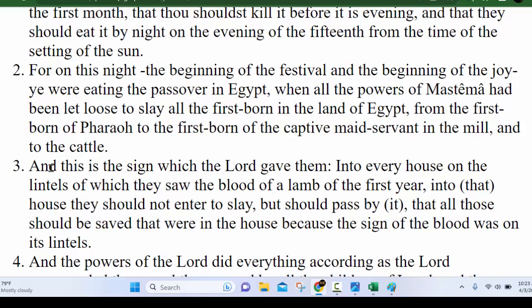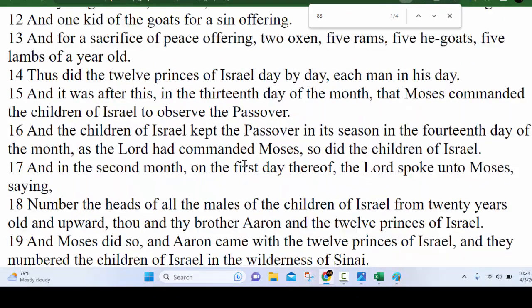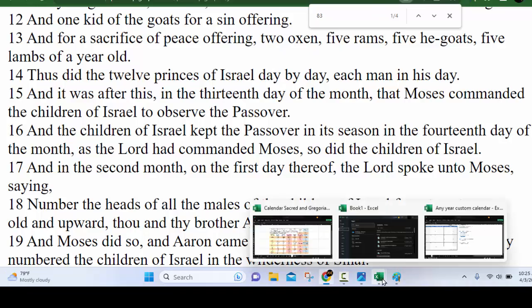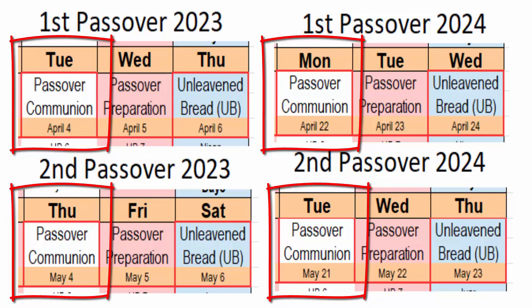In the Book of Jasher, chapter 83, verse 15, also written by Moses: 'And it was after this, in the 13th day of the month, that Moses commanded the children of Israel to observe the Passover.' So here on the 13th day of the month, they're actually receiving the commandment. Our Father didn't give these people a lot of lead time. During the daylight hours on the 13th is when they got the command — the command to do the Passover during the twilight hours.